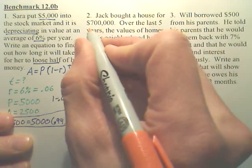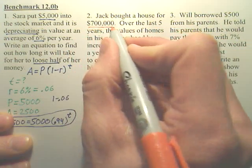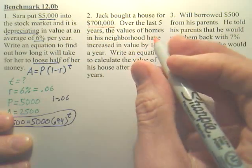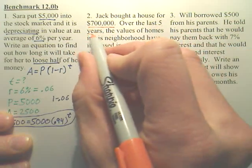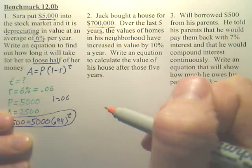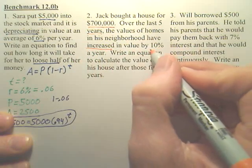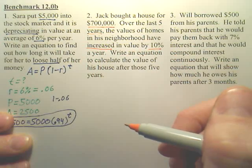Now, Jack bought a house for $700,000, a pretty big house. The last five years, that's time, the home has increased at 10% each year.